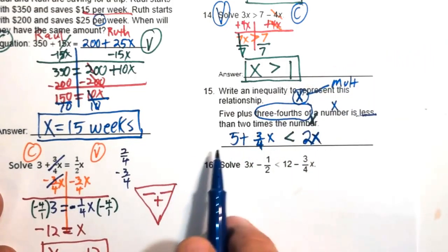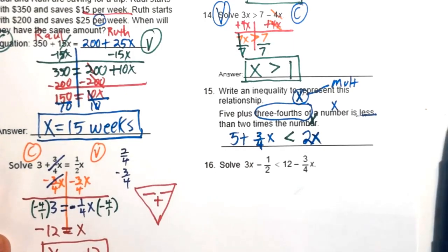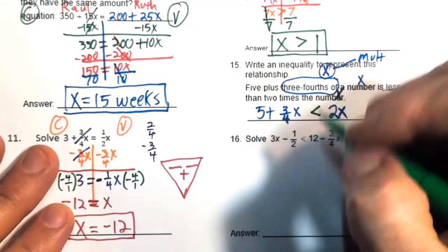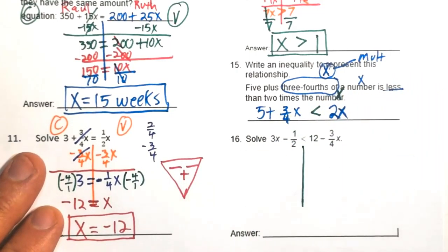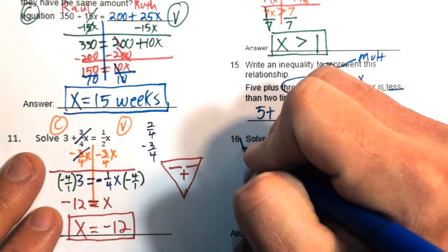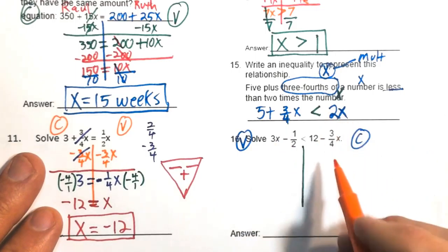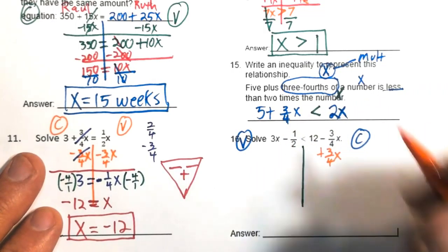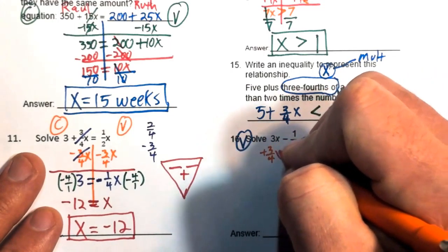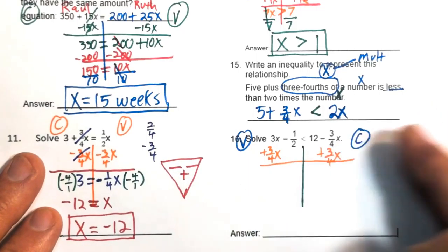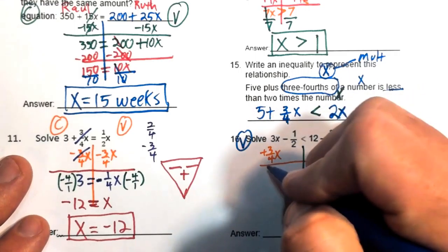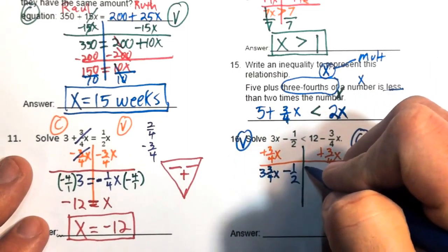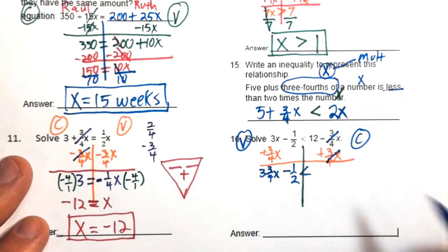Number sixteen: an inequality with fractions. Draw a line down and move the negative three-fourths x to the left by adding three-fourths x to both sides — this keeps all variables positive. Adding three-fourths x to 3x is like adding 75 cents to three dollars, giving 3.75 or three and three-fourths x. Bring down the minus one-half; the inequality comes down; the three-fourths x's cancel; bring down the 12.